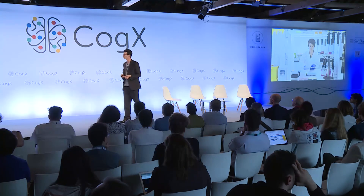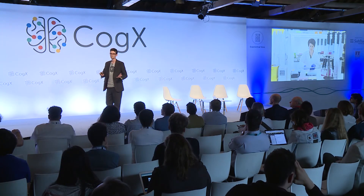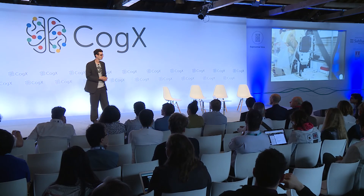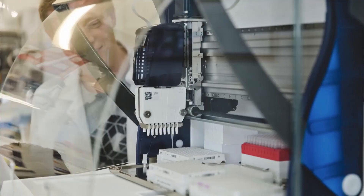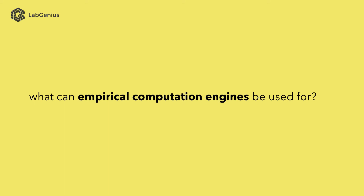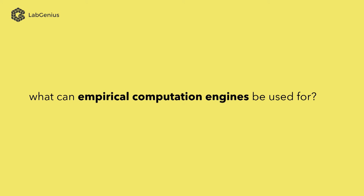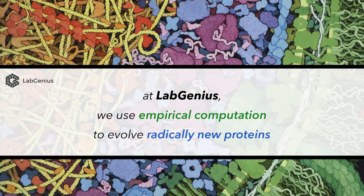Traditional experimental execution: a scientist at a desk with a pipette. Now through automation, you can completely automate that hypothesis testing process. At LabGenius, we're using our empirical computation engine to develop radically new proteins to cure disease.